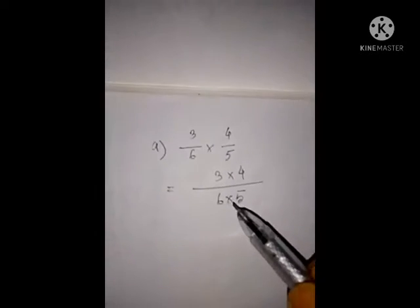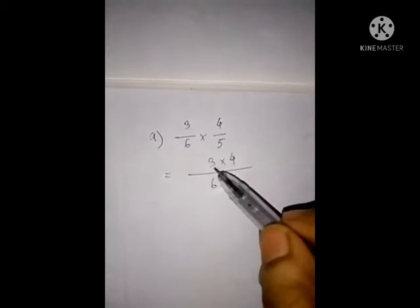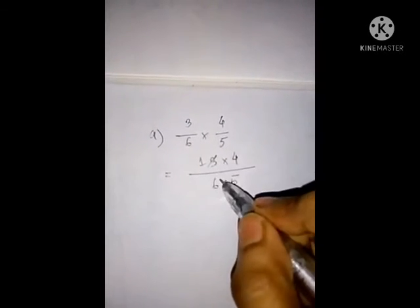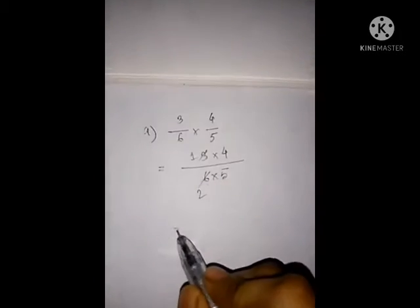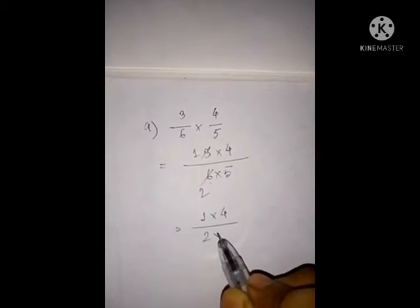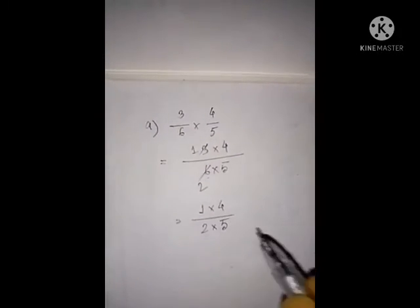We know we can cut this 6 by this 3. Because 3 ones are 3, 3 twos are 6. And now, see, what we left: above 1 into 4 and below as denominator 2 into 5. And now, see.